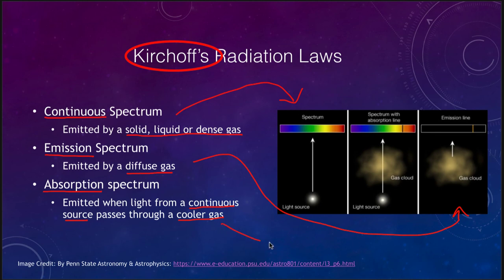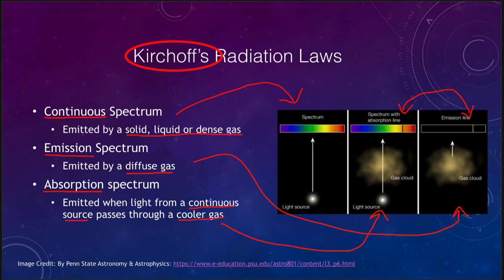When you look at the continuous source through a gas cloud, you get an absorption spectrum — instead of bright lines you get dark lines, but they correspond to the same elements. In either case we can tell what the object is made up of. With a continuous spectrum from a black body alone, we cannot determine composition unless we can see various lines. And importantly, in the absorption case, we are learning the composition of the cloud doing the absorbing, not the light source itself.